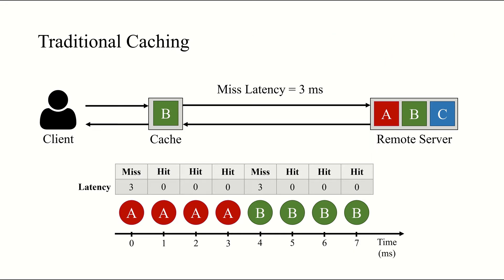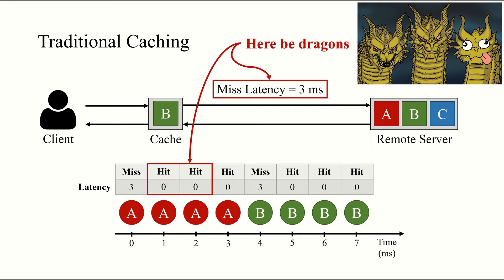Hopefully, some of you found the bug in this example. If not, here it is. We said that it takes 3 milliseconds to resolve a cache miss. So how is it that the requests that arrived just 1 or 2 milliseconds after a miss were served with 0 delay? Clearly, something's very wrong.